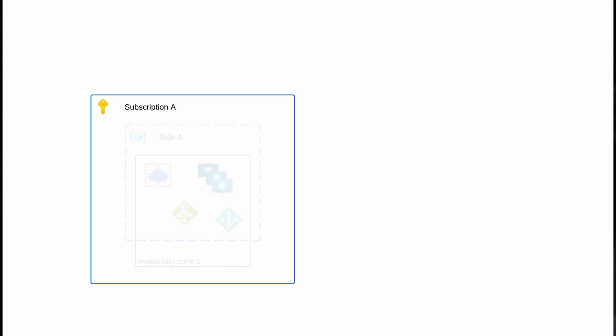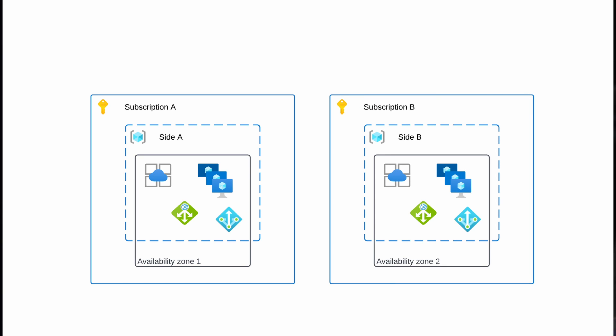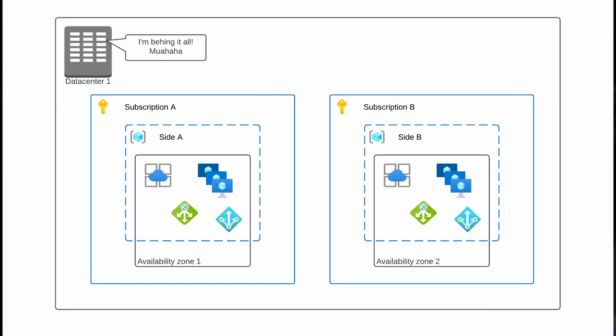The reason for this is that availability zones are mapped to data centers at the time of subscription creation. This might not seem too important, but consider this scenario: you're building a highly resilient solution and want to use availability zones, so you create one subscription for side A and build it in availability zone 2, and another subscription for side B also in availability zone 2. Since side A and side B are in different subscriptions, you can end up in a situation where both sides are backed by the same data center, losing the resiliency that availability zones provide. There are ways to figure out if availability zones in different subscriptions map to the same data centers, but it's a bit finicky — so just keep this in the back of your head.